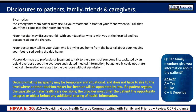Some examples from the Office for Civil Rights guidance on disclosures to family and friends: an emergency room doctor may discuss your treatment in front of your friend when you ask that your friend come into the treatment room, or your daughter at the hospital may ask questions about the charges. Your doctor may also tell the person driving you home that you need to keep your foot elevated during the ride. It's not a full permission to give out the patient's full medical information, but what they need to know to help them is permissible.